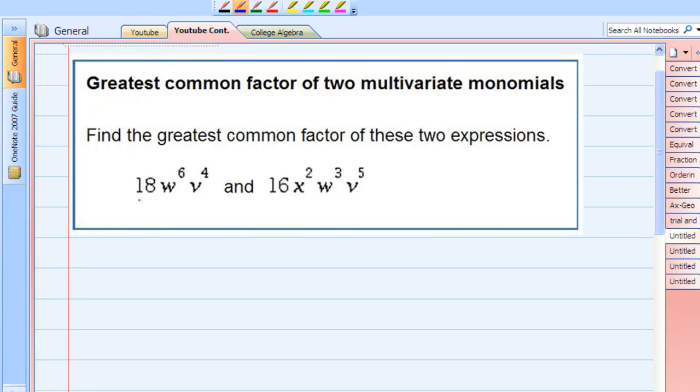Greatest common factor of two multivariate monomials. We're asked to find the greatest common factor of these two expressions and we'll notice that they each have a numerical part and they each have a variable part.